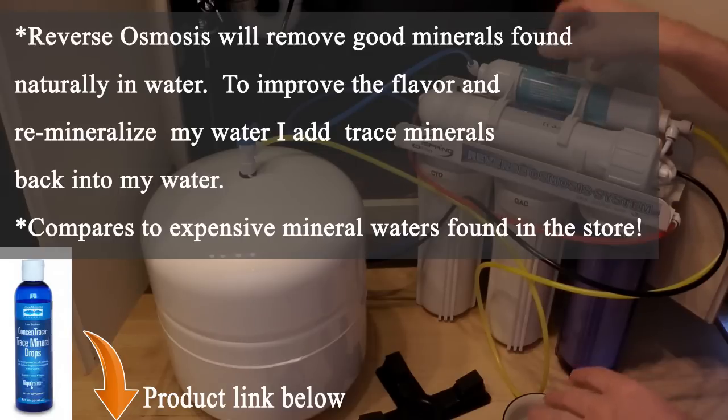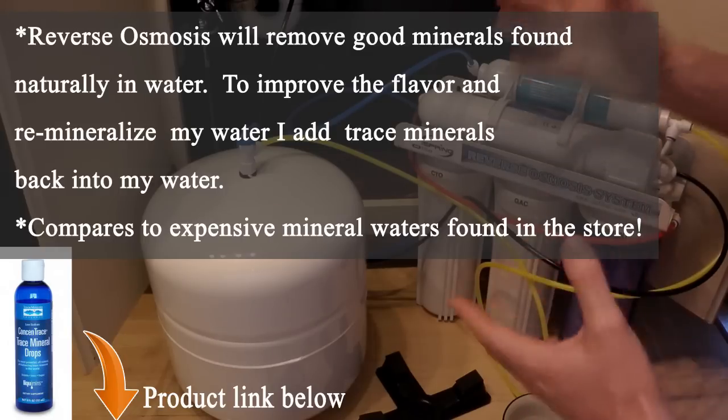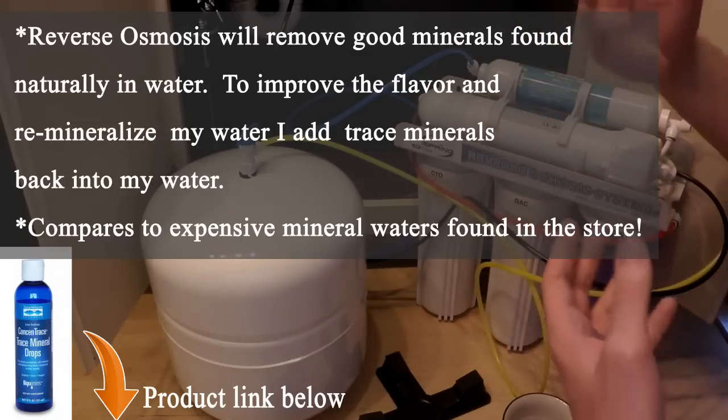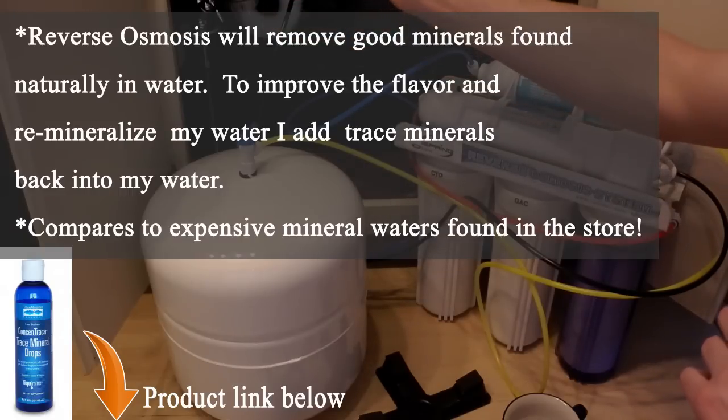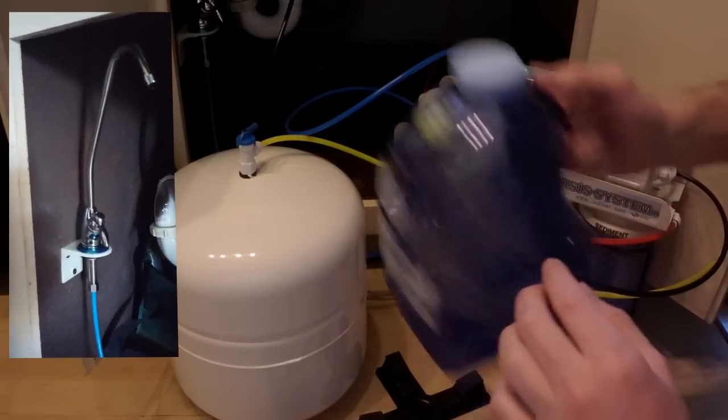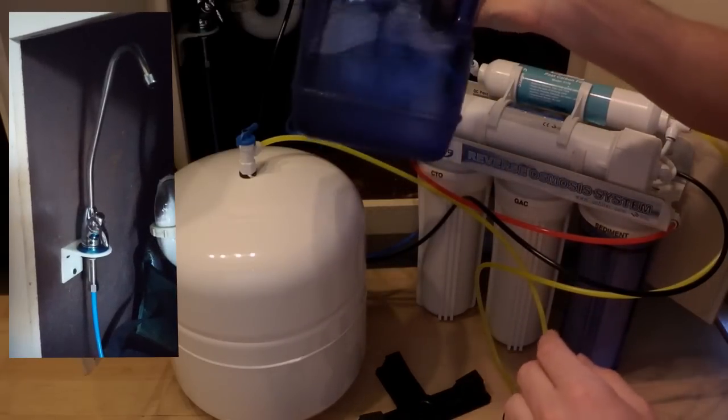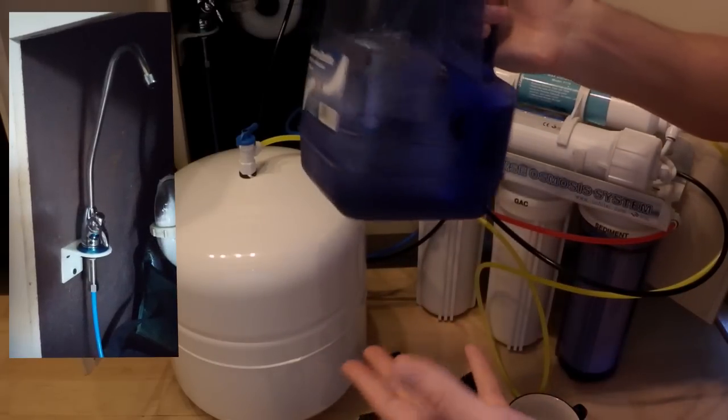And in the fifth stage is your post-carbon filter, which gives your water a final polishing before you go ahead and drink it. I don't own the condo, I rent it, so I had to install the spout underneath the sink, which is totally fine because I just fill up this gallon jug, put it in my refrigerator, and I'm good to go for the day.